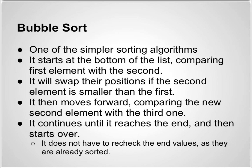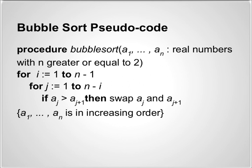Bubble Sort swaps the positions if the second element is smaller than the first, and then continues upward, comparing the new second element with the third element. It does this until it reaches the end, and then it starts over. Note, however, that it does not have to recheck the end values, because they are already sorted. Here's a good reference for how to perform the Bubble Sort operation, given in pseudocode, so it can be easily translated into several different languages.